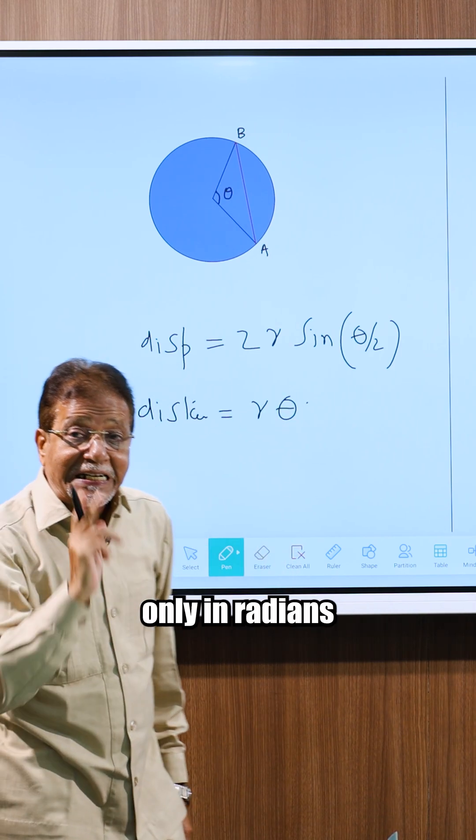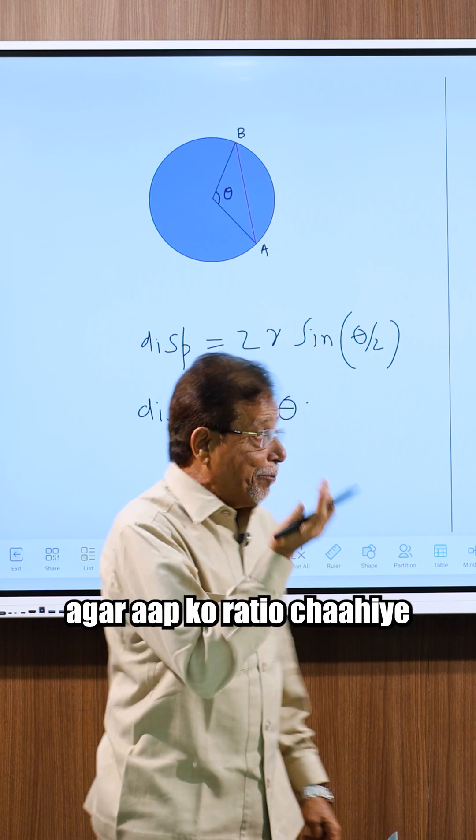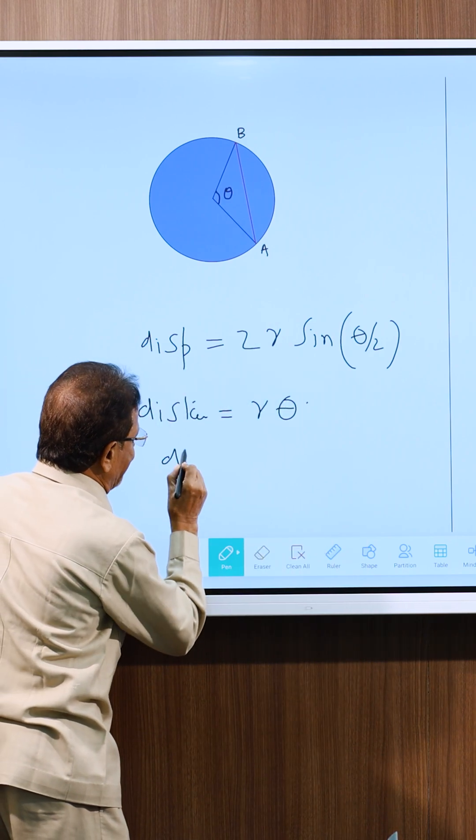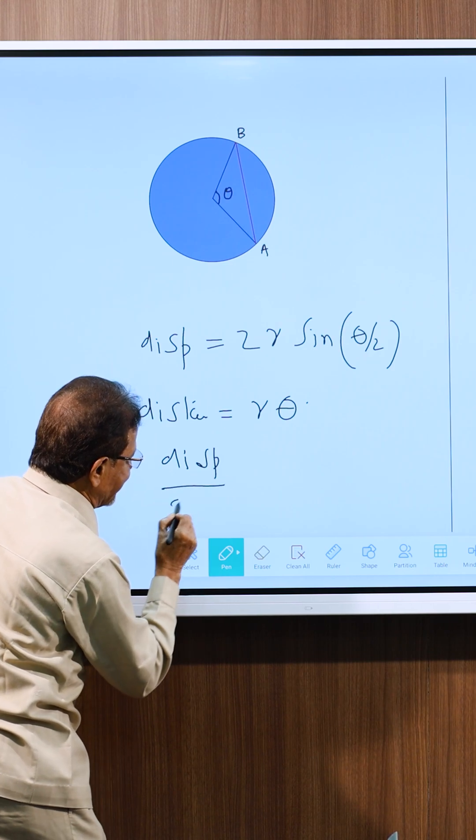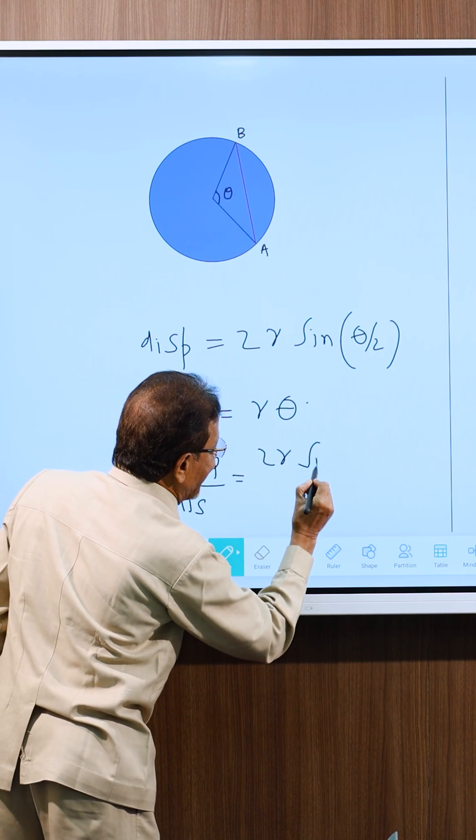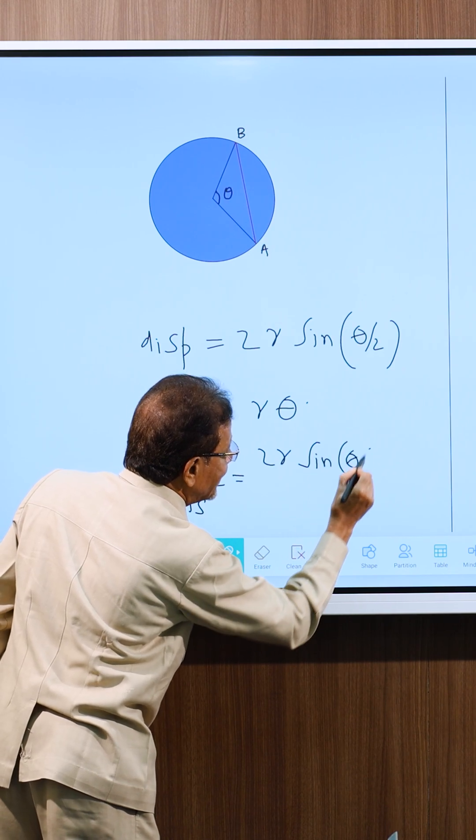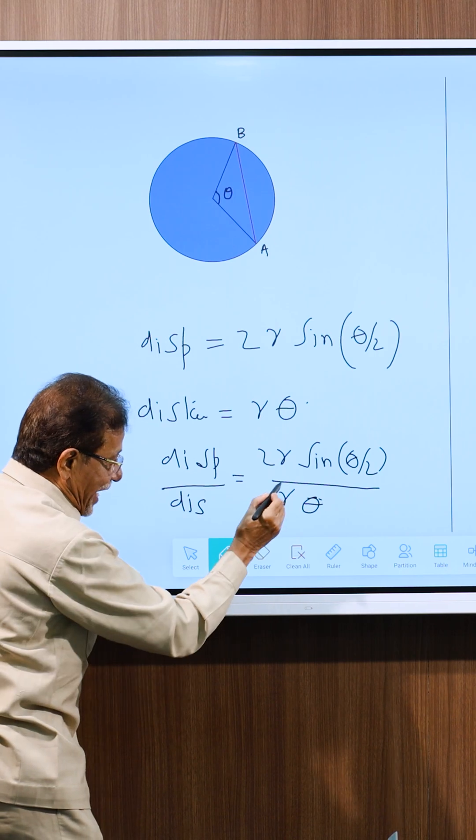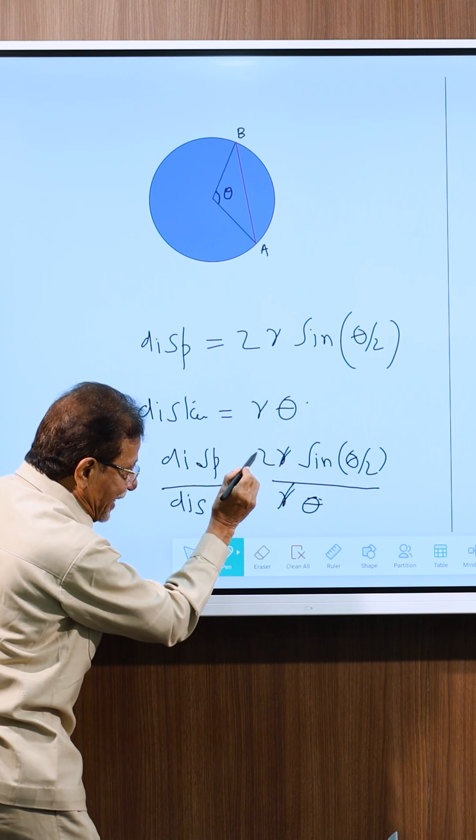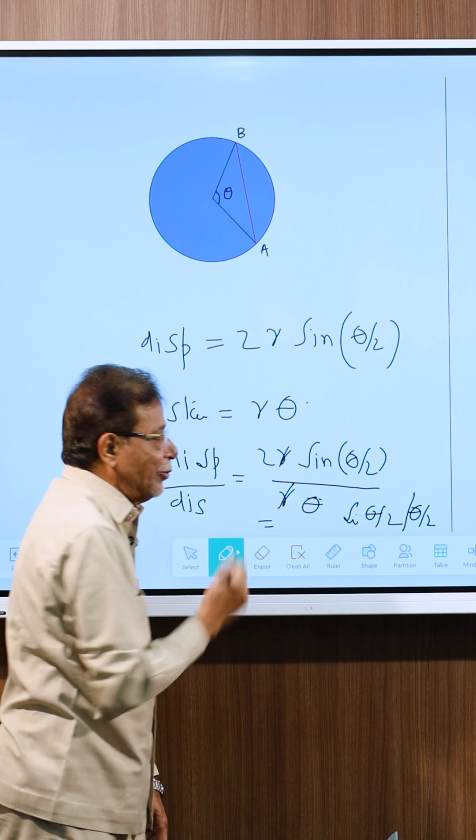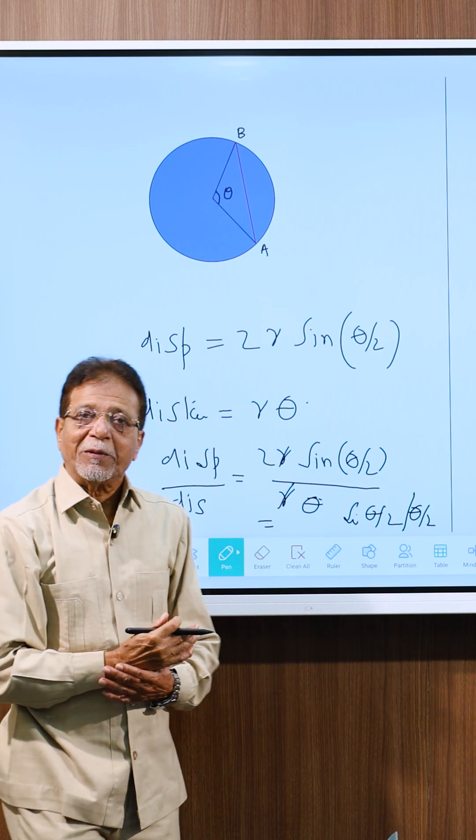Remember theta should be only in radians. If you need ratio then ratio will be displacement upon distance is equal to 2R sine theta by 2 upon R into theta. See R and R will get cancelled and we can take 2 downwards. So it will be sin theta by 2 upon theta by 2. That is the ratio of displacement to distance.